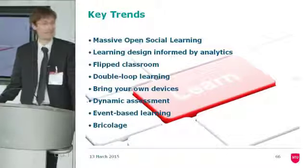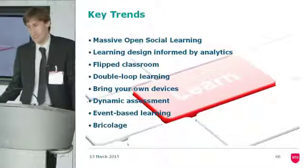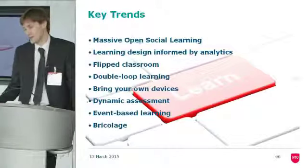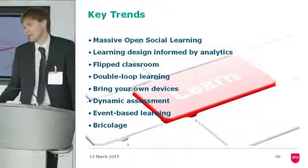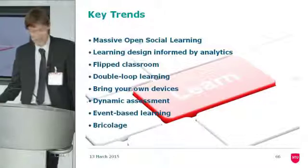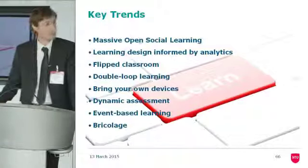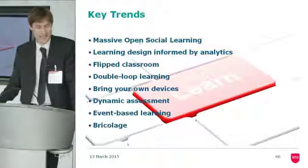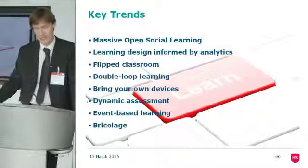Double-loop learning and the double-loop learner is an interesting concept. What we're looking at here is the ideal learner — one who reflects not just on what they've learned, but on the actual structure and process of learning. These are the self-determined learners who make it to the end of MOOCs. That double-loop learning process is something we need to work harder on, to make sure our learners are reflecting upon the process of learning as they move through their educational journey.